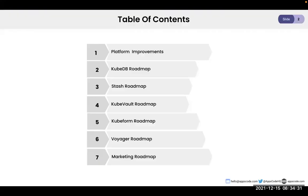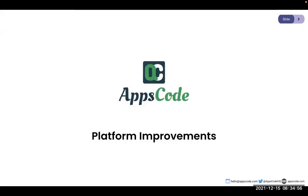So let's start — we can go over our various product lines and what we are looking to do. This is the tentative roadmap, so as the year progresses things will change, but this is the general high-level plan. First I'm going to talk about a number of features that will affect not just a single product but across all our product lines.